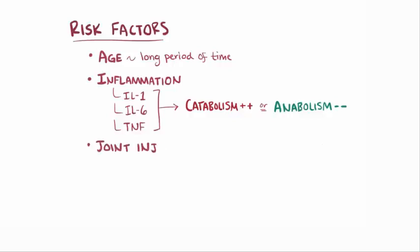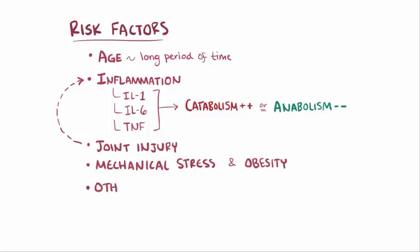Also, joint injury, which brings with it a lot of inflammation, seems to be a major risk factor for osteoarthritis, as well as mechanical stress and obesity. Other risk factors include neurologic disorders, genetic factors, and even certain medications, suggesting that there are other mechanisms at play as well.